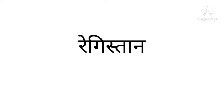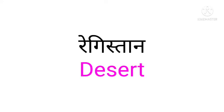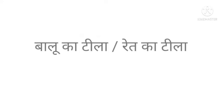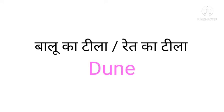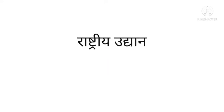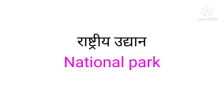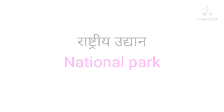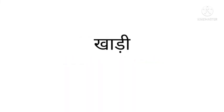Next word is 'gudda' — we say in English: pit. Next word is 'registan' — we say in English: desert. Next word is 'balu ka tila', also called 'ret ka tila' — we say in English: dune. Next word is 'udyan' — we say in English: park, or national park.